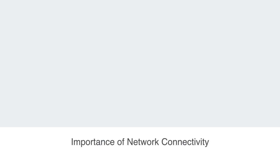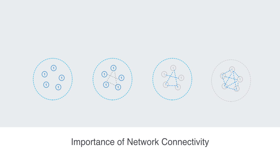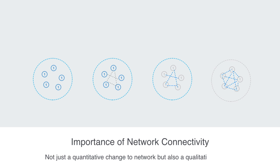One of the defining features to a network is going to be its overall degree of connectivity, which might qualify as the defining feature. Going from a system with a low degree of connectivity to one with a high degree of connectivity is not just a quantitative change in the number of edges within the network — it is also a qualitative change.